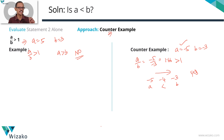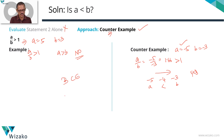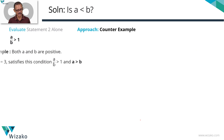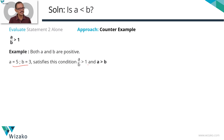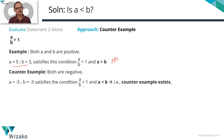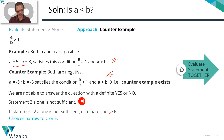Both examples satisfy a/b > 1: one gives no, the other gives yes. Statement 2 also does not give a conclusive answer — a counter example exists, so statement 2 alone is not sufficient. We were down to B, C, or E after statement 1. Now eliminate B. We are down to C or E. Let's evaluate the statements together.